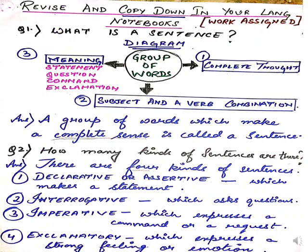Children, you need to copy this down in your notebook and revise. If asked what is a sentence, you have to write three things: complete thought, subject and verb combination, and meaning. Under meaning, the four types are: statement, question, command, and exclamation. A group of words which make a complete sense is called a sentence. There are four kinds of sentences: declarative or assertive (makes a statement), interrogative (asks questions), imperative (expresses command or request), and exclamatory (expresses strong feeling or emotion).